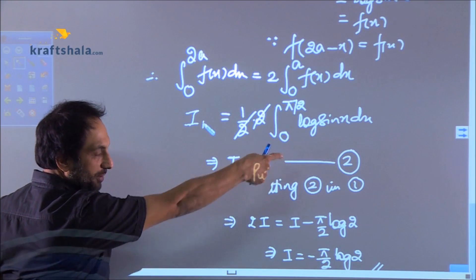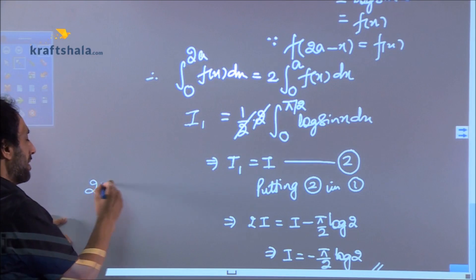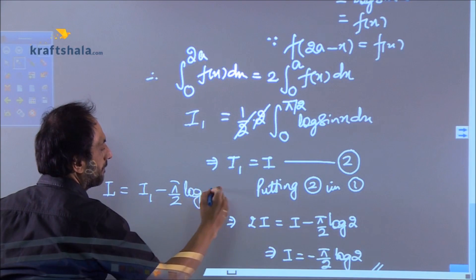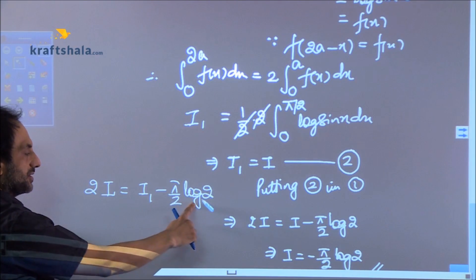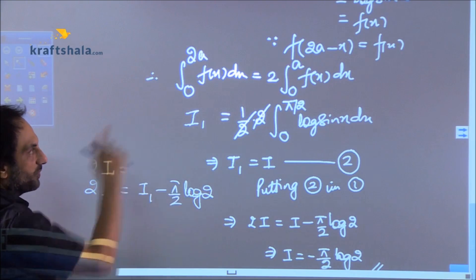So you put equation number 2 back in equation number 1 and if you don't remember that equation let me write that equation for you. I remember it. This is that equation and you replace I₁ with I.